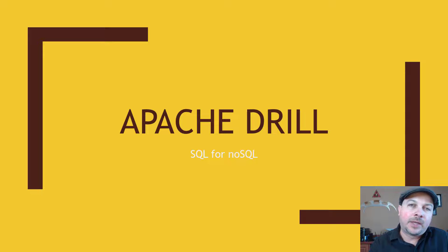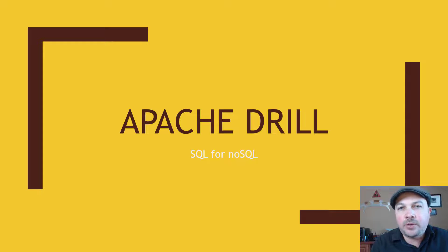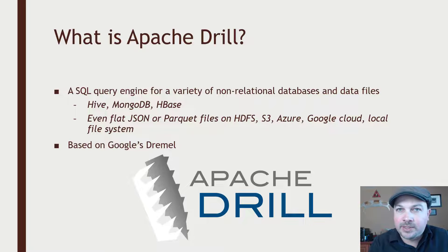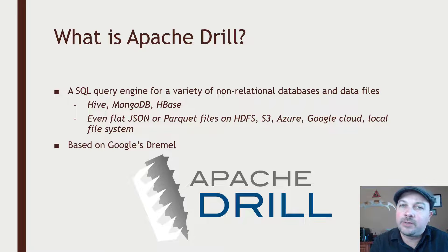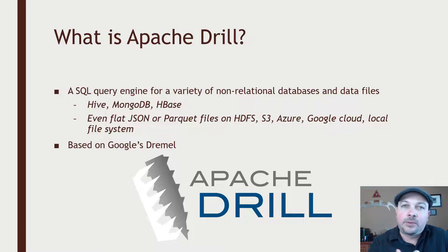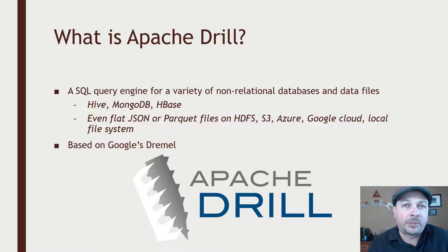Apache Drill is a system that sits on top of your various data storage technologies and lets you execute actual SQL queries on top of data that might not even have a schema at all, and that certainly isn't relational in nature. It's a SQL engine that allows you to run relational-looking SQL queries across a wide variety of non-relational databases and data files — Hive, MongoDB, HBase, flat JSON format, Parquet files on HDFS, Amazon S3, Microsoft Azure, Google's cloud services, or even your local file system. With Drill, you can treat these non-relational data sources as though they are relational, and it does a lot of complicated magic under the hood to make this work efficiently.